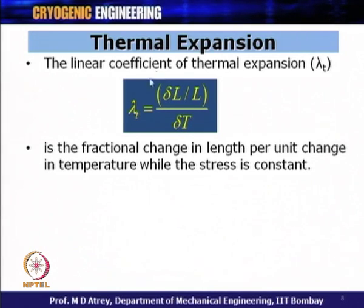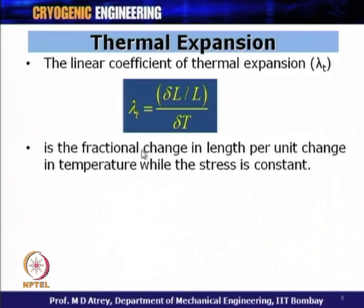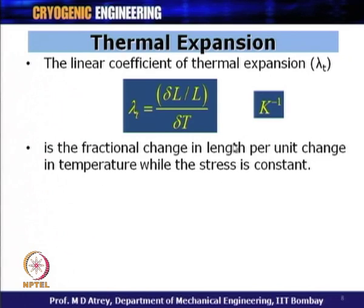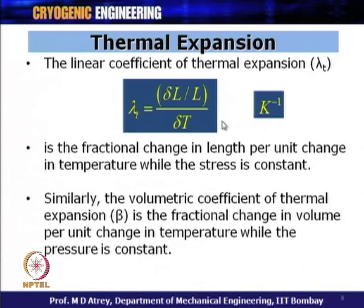Lambda_T is a characteristic property of a material and depends on temperature — the fractional change in length per unit change in temperature can be different at 300 K, 150 K, or 80 K. Additional stresses can be generated due to contraction and expansion of joints. Similarly, we can define the volumetric coefficient of thermal expansion beta as the fractional change in volume per unit change in temperature at constant pressure. For isotropic materials, beta = 3·lambda_T.